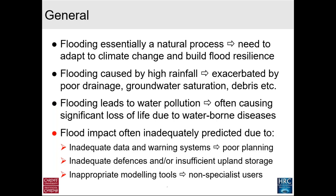Flood impact is often inadequately predicted for a number of reasons. Firstly, we may have inadequate data and warning systems, and poor planning — less prevalent in the UK these days but still an issue. There are also inadequate defences or insufficient upland storage. But the one I'd like to focus on is inappropriate modelling tools. Many people now running sophisticated computer models haven't really got the background or training to adequately interpret them or put in the correct data. There's often nothing wrong with the models themselves, but there are big errors in how data is interpreted.